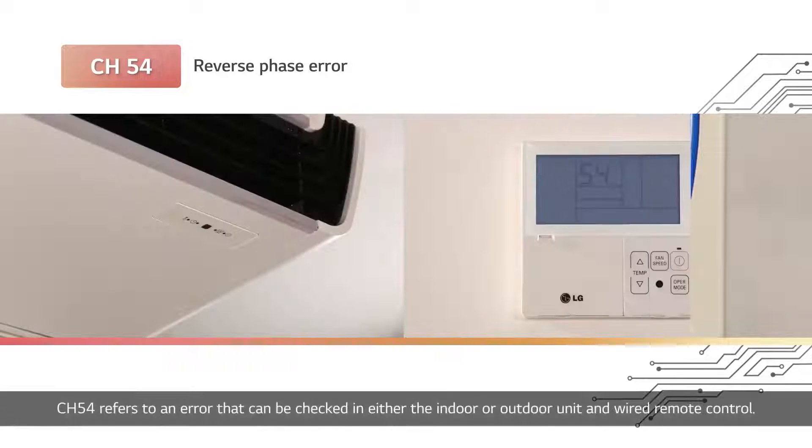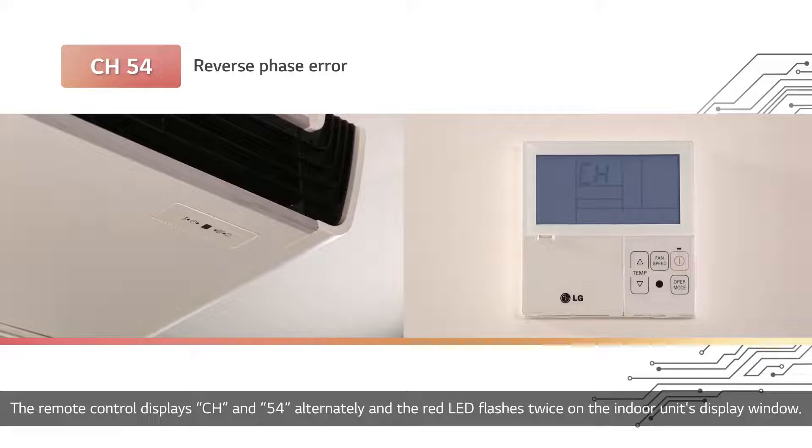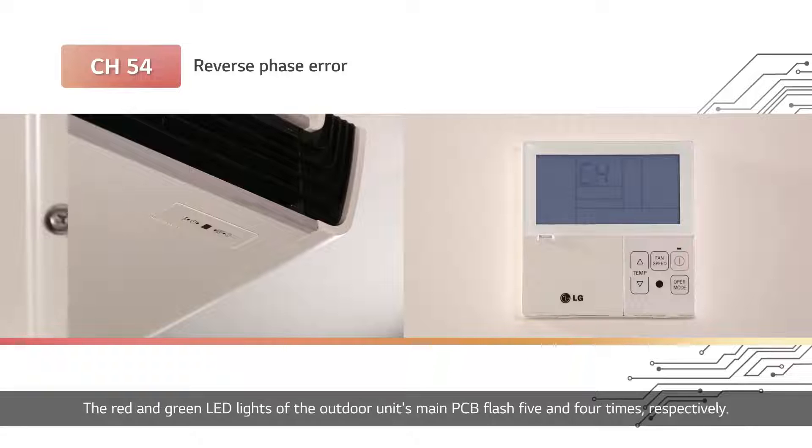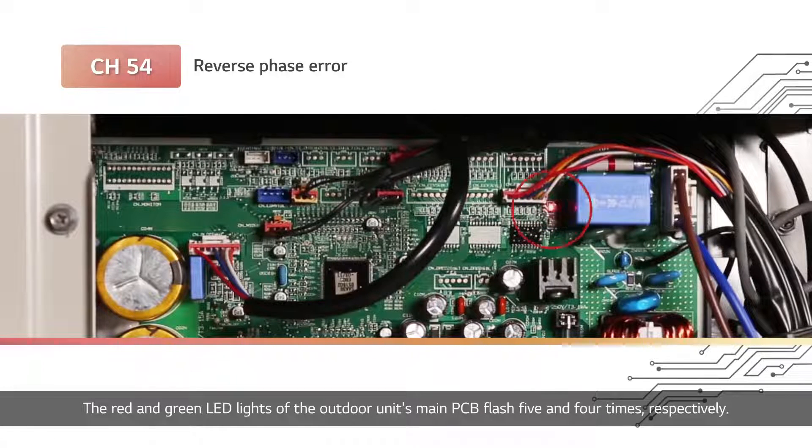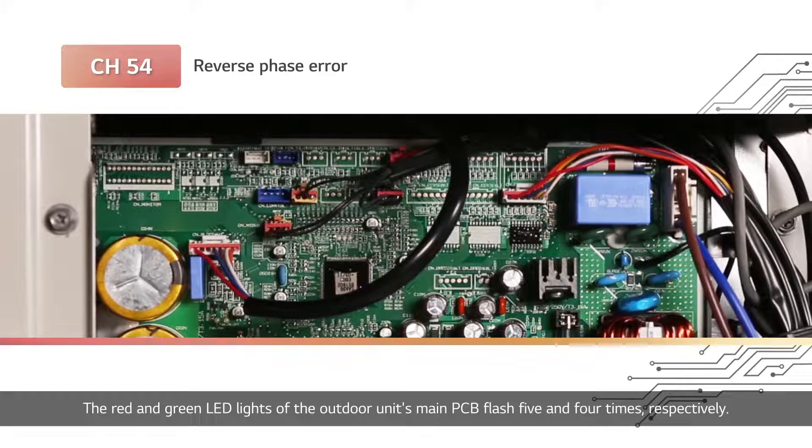Channel 54 refers to an error that can be checked in either the indoor or outdoor unit and wired remote control. The remote control displays CH and 54 alternately and the red LED flashes twice on the indoor unit's display window. The red and green LED lights of the outdoor unit's main PCB flash 5 and 4 times respectively.